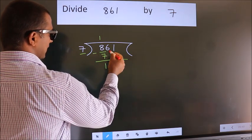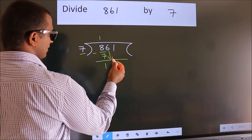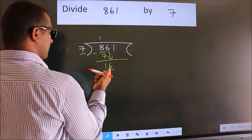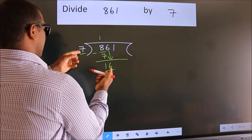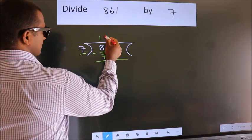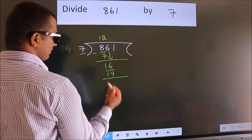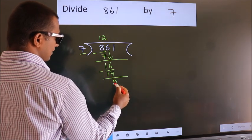After this, bring down the beside number. So, 6 down. So, 16. A number close to 16 in 7 table is 7 2s 14. Now, we subtract. We get 2.